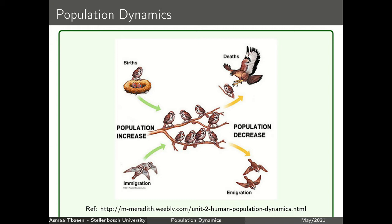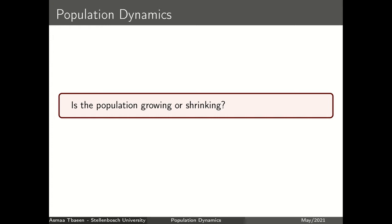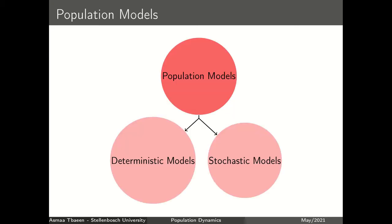By applying mathematical tools, population models are used to study the dynamics of any population, whether it is growing or shrinking. A mathematical model is an expression used to describe mathematical concept-based systems, and they are widely used in natural sciences. Dynamical systems, statistical models, and differential equations are some forms of mathematical models that can be used. There are two types of population models: deterministic models and stochastic models, and these models could be described in a discrete or continuous form.